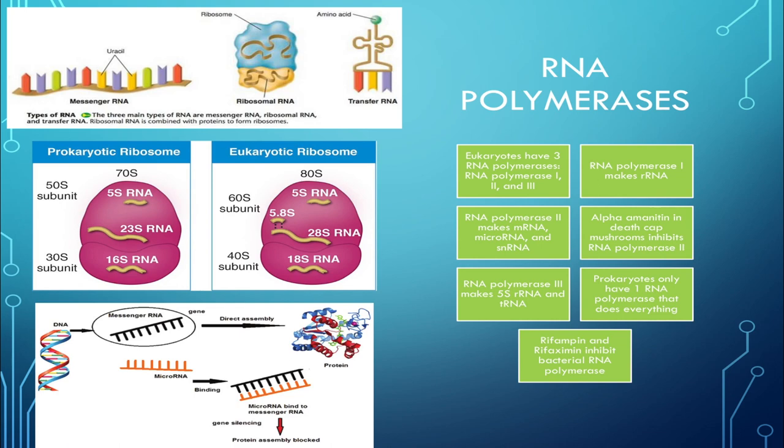RNA polymerase 2 can also open up the DNA at the promoter site to help with transcription. A fun fact is that there's a toxin called alpha-amanitin, found in death cap mushrooms, that inhibits RNA polymerase 2 and can cause severe liver toxicity if humans eat it.